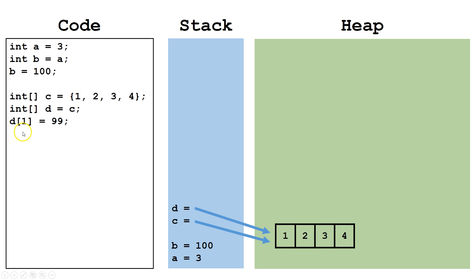This line of code has us reach into the object on the heap and change index 1 to equal 99. Since C and D are both pointing to the same object, this ends up affecting both C and D.